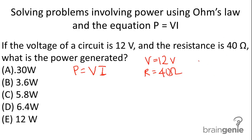Ohm's Law is V equals IR. We don't have I, so once we solve for I, we have the expression I equals V over R. We simply take this expression from Ohm's Law and substitute it in for I.